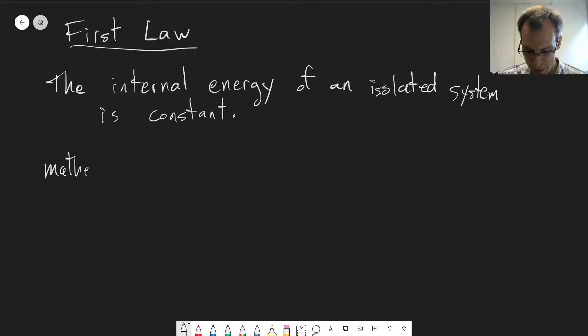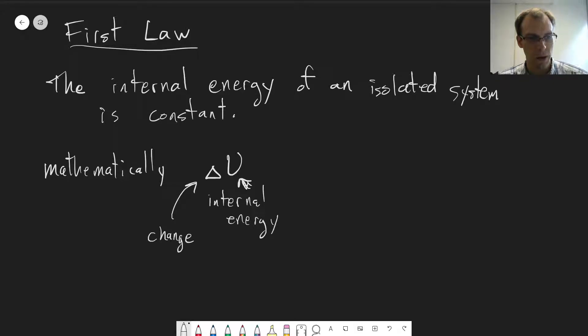We can also express this mathematically, and we'll see this equation a lot over the next little while. But delta U, and this is our internal energy here, and the delta here means a change. So the change of U for an isolated system is equal to Q plus W.